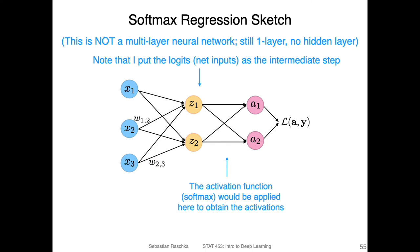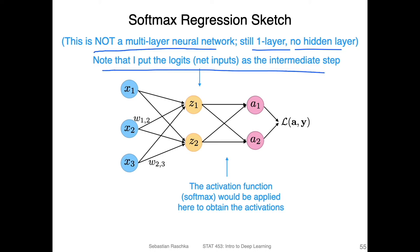Here is a sketch of the computation graph of softmax regression. I personally find it easy to think of a model by looking at a computation graph. Note that this is not a multi-layer neural network yet — we will talk about that in the next lecture. It's still one layer with no hidden layer. It may look like it because I drew the net inputs as an intermediate step. Usually in drawings of multi-layer neural networks, the net input and activation function are combined into one node.